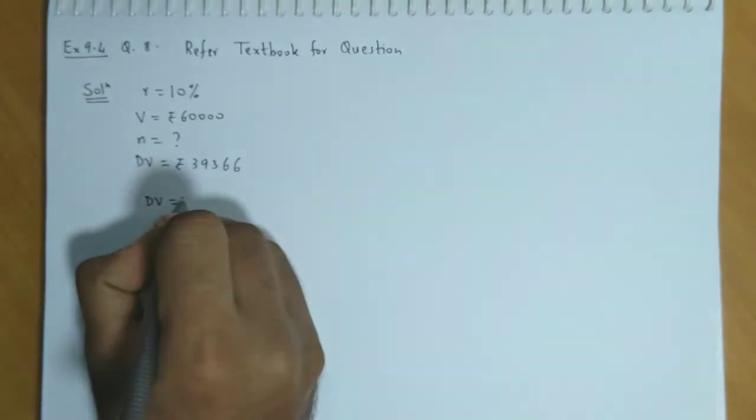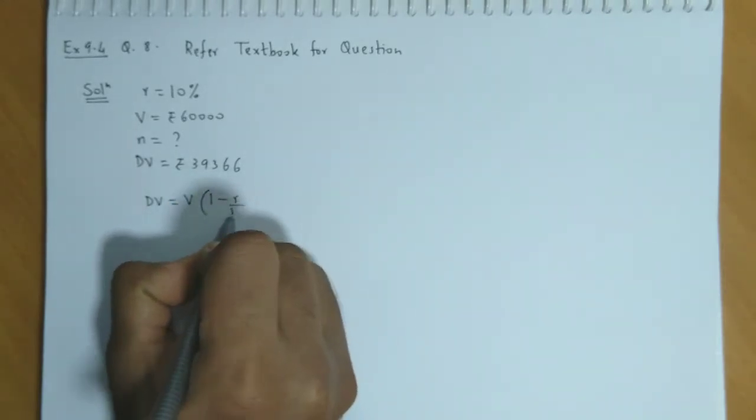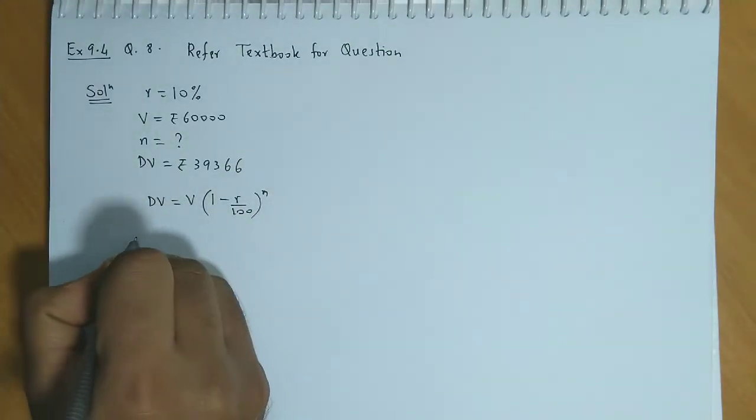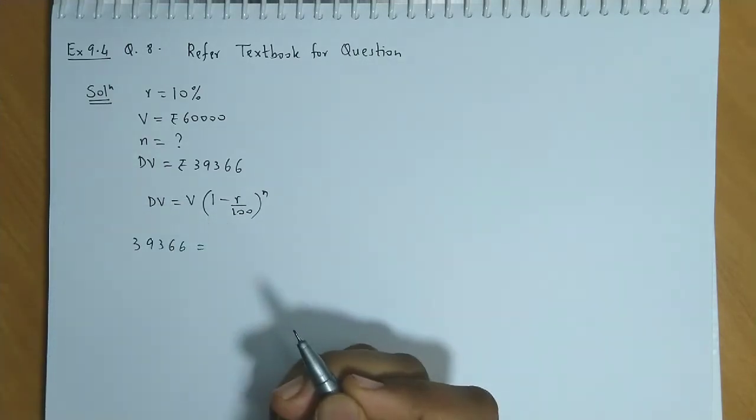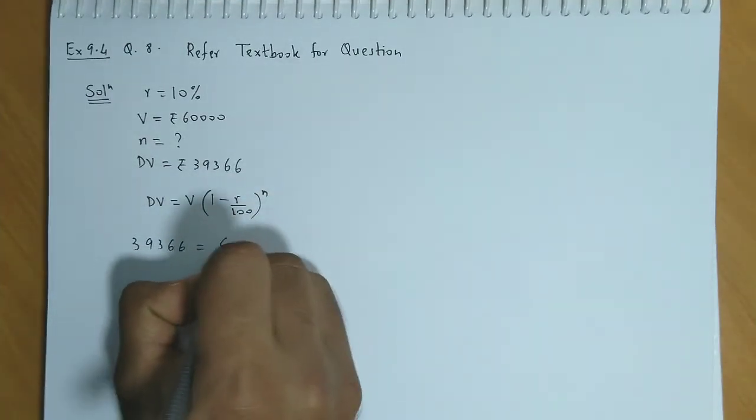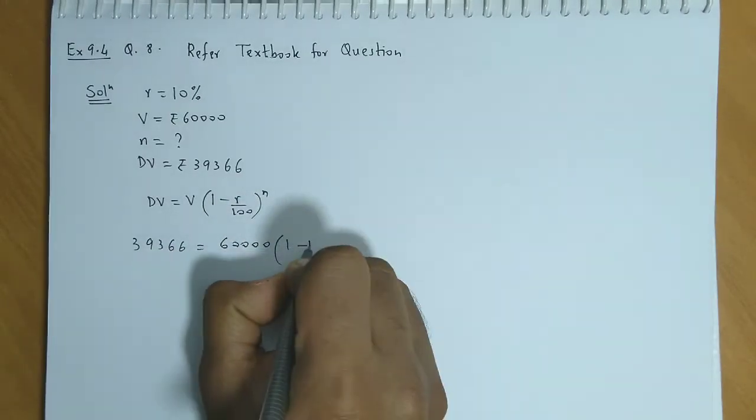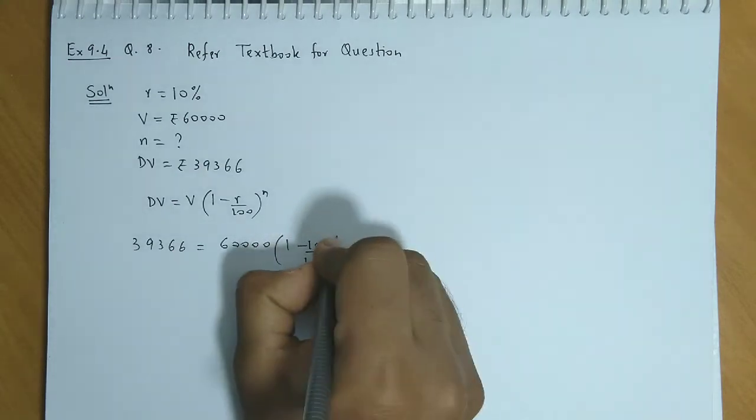Now, the formula is V times 1 minus R by 100 raised to N. The depreciated value is 39,366. The original value is 60,000. 1 minus rate of depreciation is 10% raised to N.